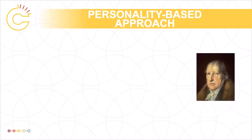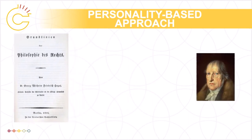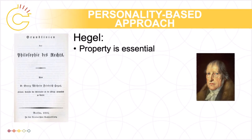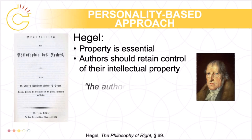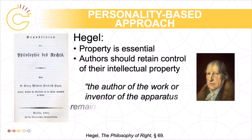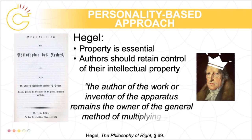Hegel's writings on intellectual property deal with both artistic works and invention. In Philosophy of Right, Hegel claims that property is essential, noting that it is required to provide individuals the freedom to interact with each other through mutually consenting contracts. Hegel specifically argues that inventors and authors should retain control over their intellectual property, noting: 'The author of the work or inventor of the apparatus remains the owner of the general method of multiplying such products.'